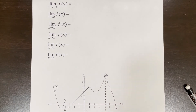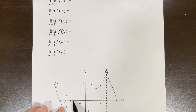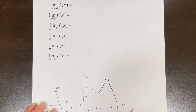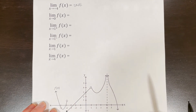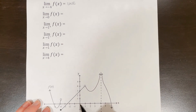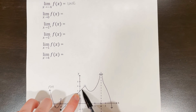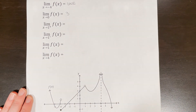Let's find the limit of f of x as x approaches negative 4. From the left side, f of x is approaching 1, but from the right side, f of x is approaching negative 1. Since the left-side and right-side limits are not the same, the limit does not exist — DNE. For the limit as x approaches 0, from the left side f of x is approaching 3, and from the right side f of x is also approaching 3. Since both sides match, the limit of f of x as x approaches 0 is equal to 3.